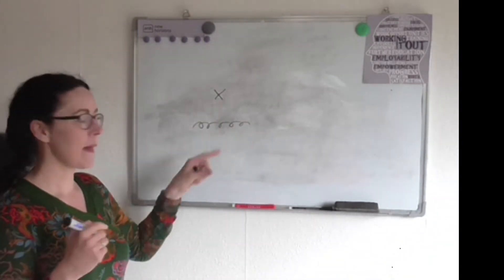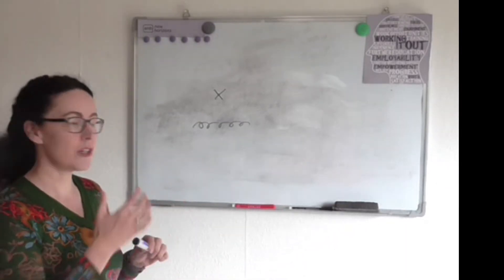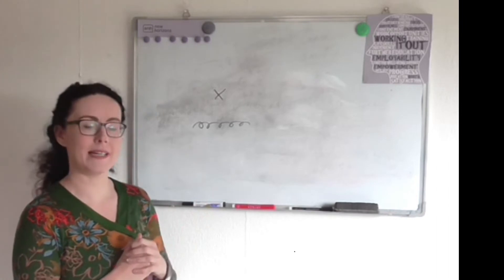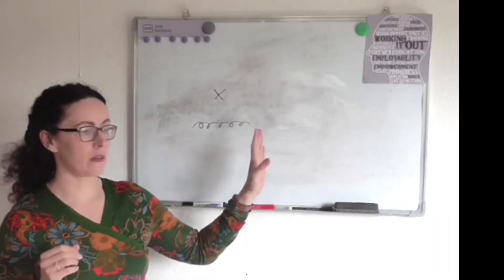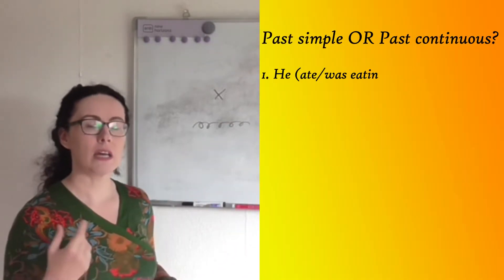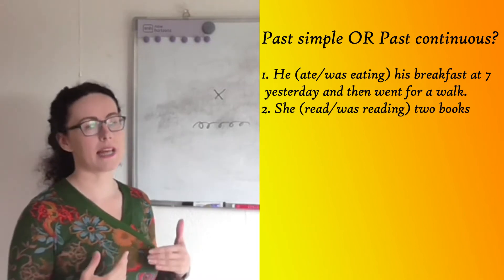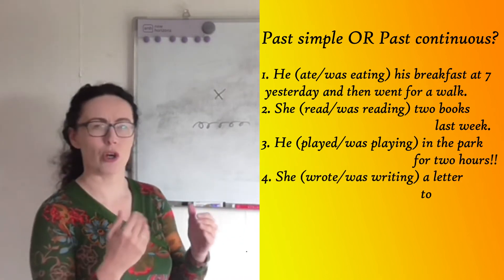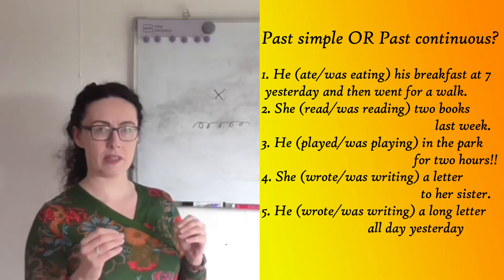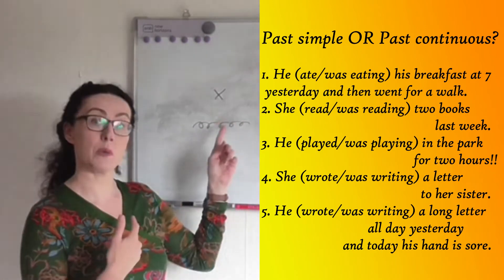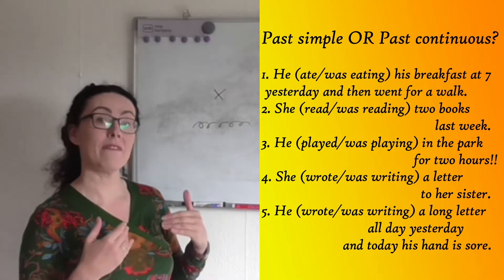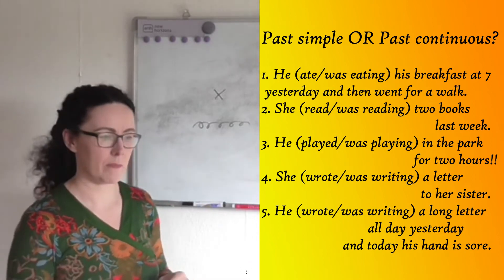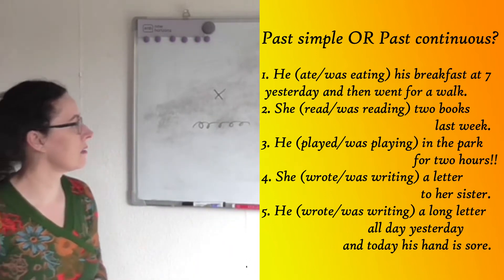The basic difference between simple and continuous: this is simple and this is continuous. The shapes that you can see here really tell us how those tenses look in time. On the board you'll see the sentences I gave you in the last episode, and what you were going to try and do was decide which option worked best. In some cases there are two options — you can go either way — but the meaning of the sentence may change, sometimes dramatically.